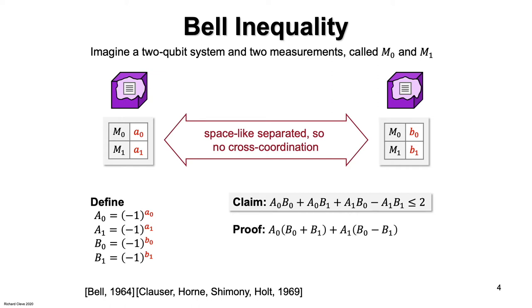We can write the left side like this. Now, consider the expressions in the parentheses. B zero plus B one and B zero minus B one. B zero and B one either have the same sign or different signs.